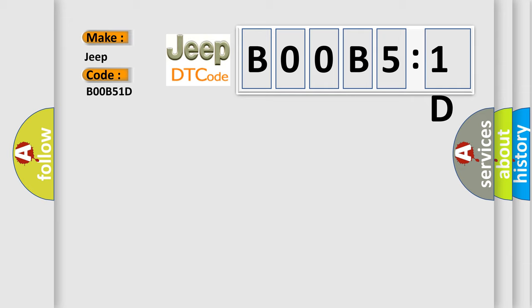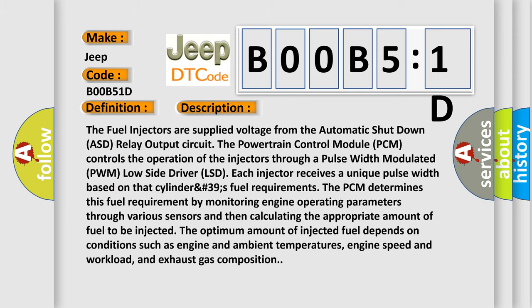The basic definition is fuel injector three circuit open. And now this is a short description of this DTC code. The fuel injectors are supplied voltage from the Automatic Shutdown (ASD) relay output circuit.